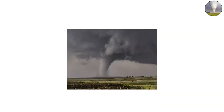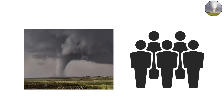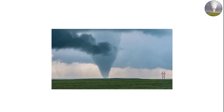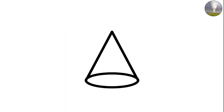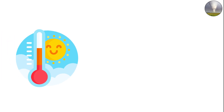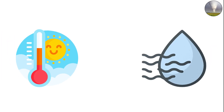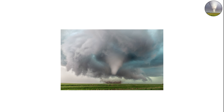Cone tornadoes — the classic funnel. Cone tornadoes are what most people imagine when they think of tornadoes. The funnel widens as it extends downward, giving it a distinct cone shape that's wider at the base than at the top. This happens because the rotation in the lower atmosphere strengthens more than the rotation near the cloud base. The inflow of warm, moist air at the surface pulls the funnel outward, creating that flared shape.